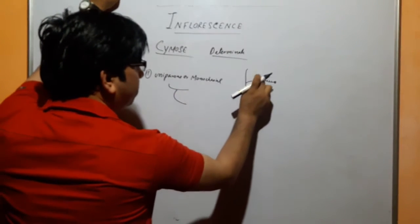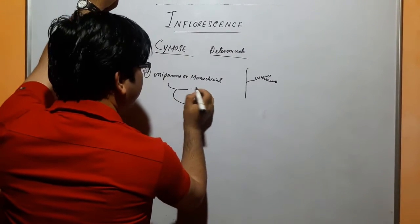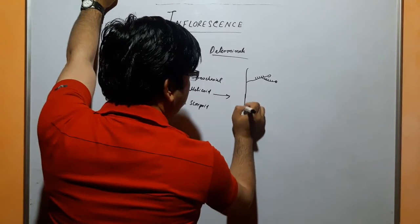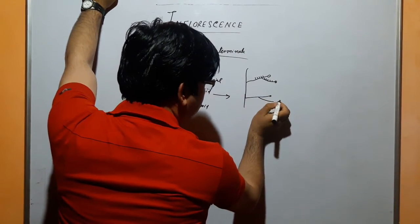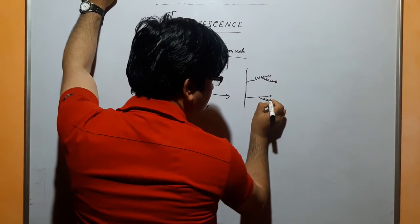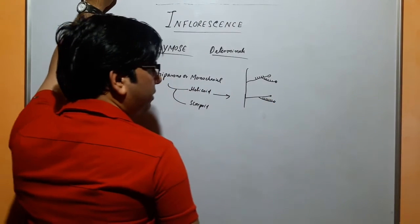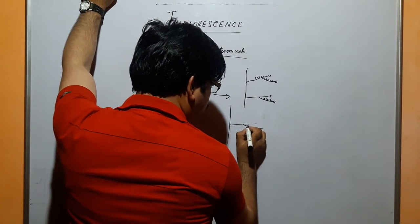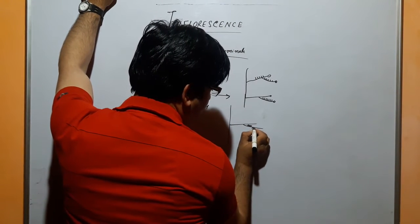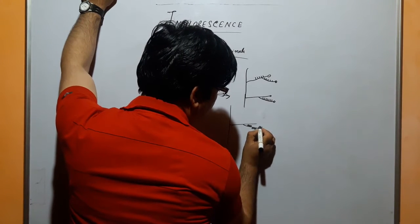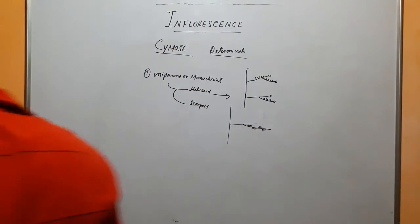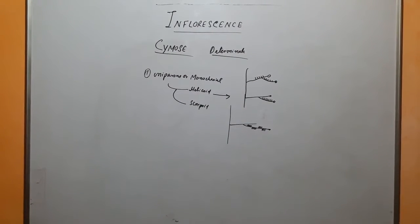There are two types based on arrangement of flowers on this second branch. One is helicoid. Second is scorpioid. In helicoid, the peduncle is released, the end of the branch is released, the lateral branch is released — one side of the branch is released — then the terminal flower. This is helicoid type. This is scorpioid type.